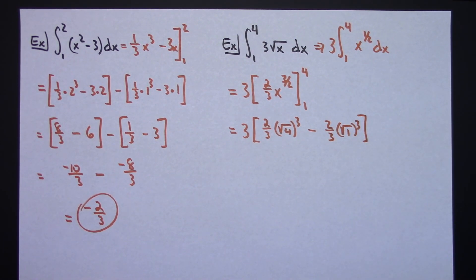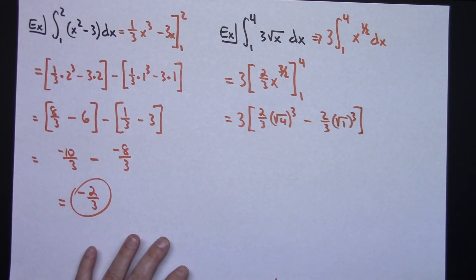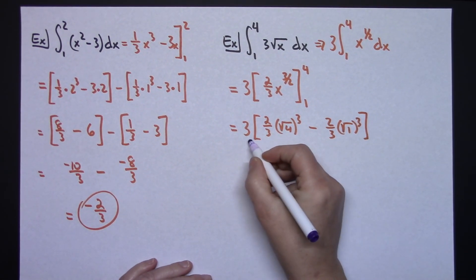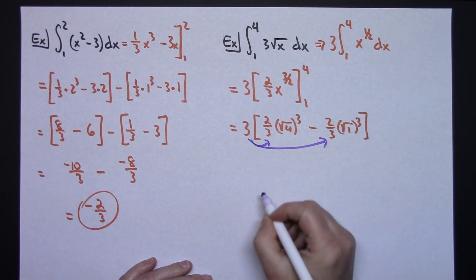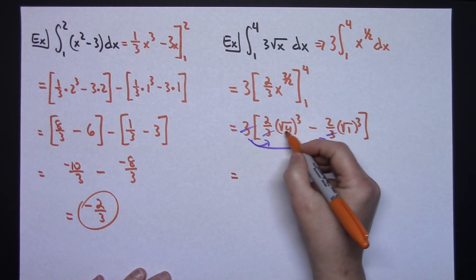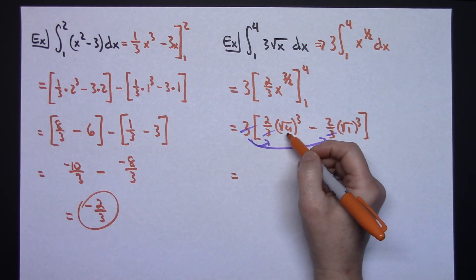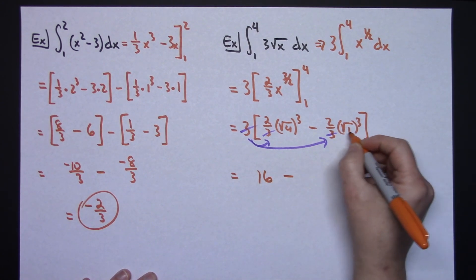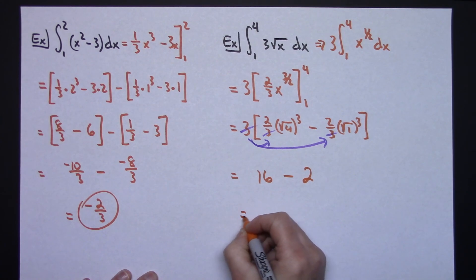Much smaller numbers there. Okay, now let's go ahead and distribute that 3. If I distribute 3 at this point, then the fractions are going to cancel out. Okay, so that's going to make it a whole lot easier on the arithmetic as well. Alright, square root of 4 is 2 cubed and then times another 2 is going to give me a 16. Alright, square root of 1 cubed times 2 is going to give me a 2. So, that's going to make this definite interval a 14.